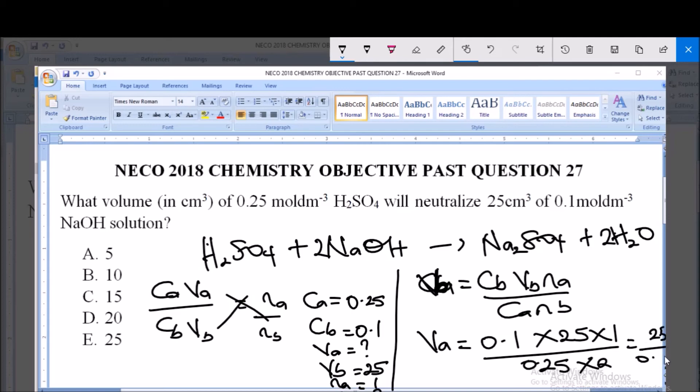So the volume of this acid required to neutralize 25 cm³ of this base is 5 cm³. Thank you and God bless you, and subscribe to the channel for more videos and past questions.